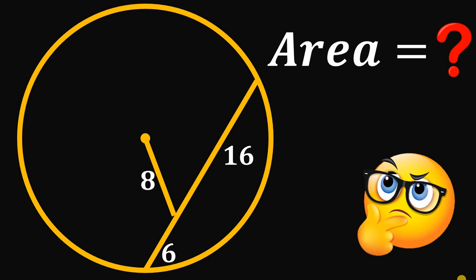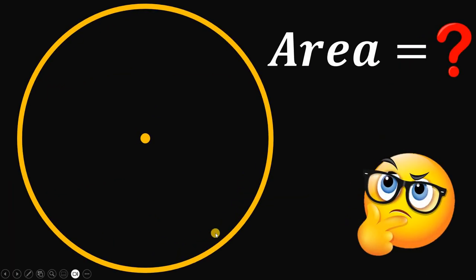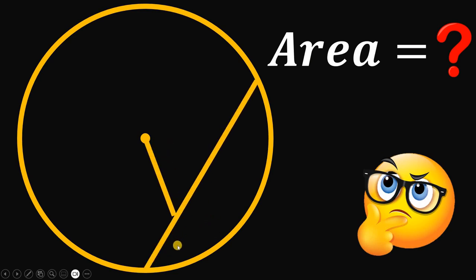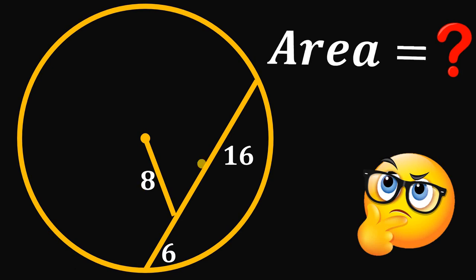For today's video, we will answer a geometry challenge coming from one of our followers. The question goes like this: given a circle, draw a chord. Then from the center of the circle, draw a segment that divides this chord into 6 and 16 units. The length of this segment must be equal to 8 units. The question is: what is the area of the circle?